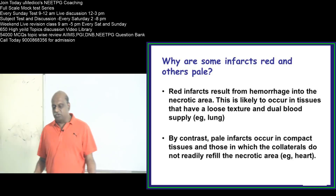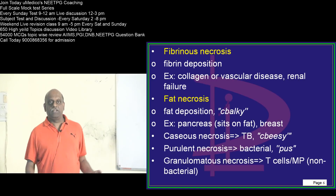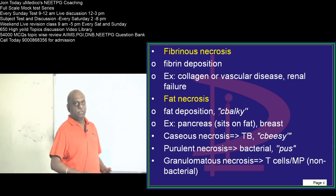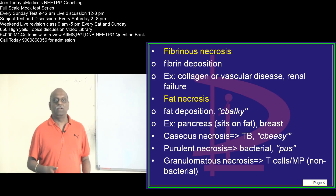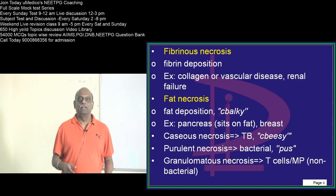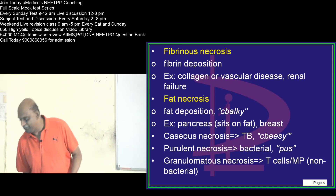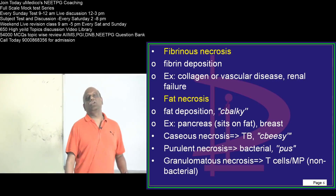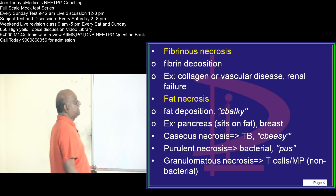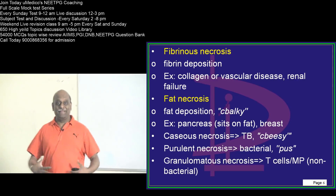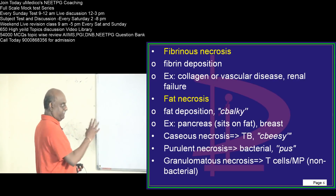Whenever hemorrhagic necrosis is present, those are called red infarcts. Now for fibrinous necrosis: whenever any collagen vascular disease is present or if there is renal failure, you find typically a fibrin deposition leading to fibrinous necrosis. Then fat necrosis — typically in the pancreas, there are a lot of lipases and they lead to injury, so you find fatty necrosis.